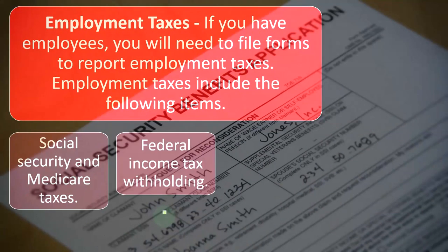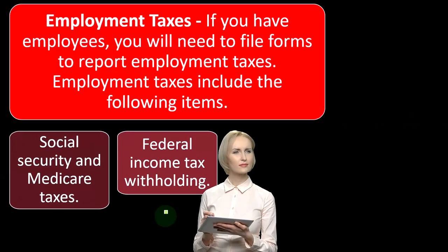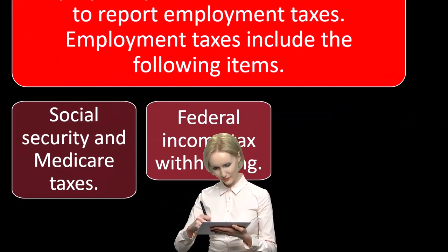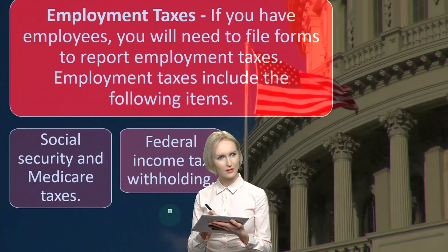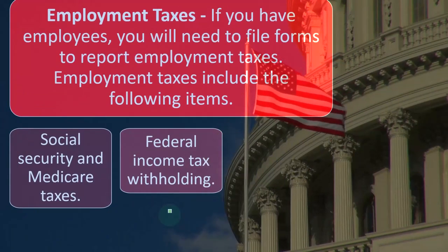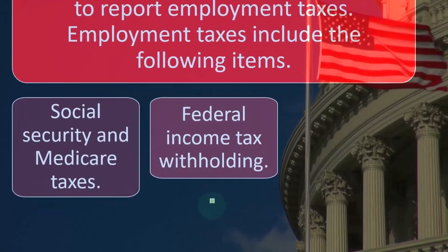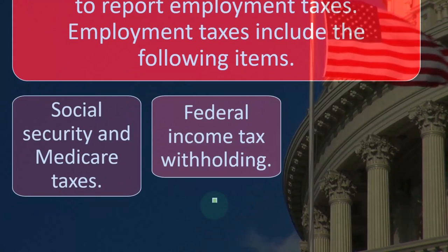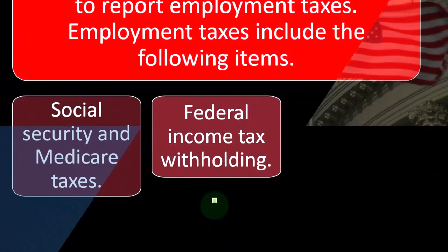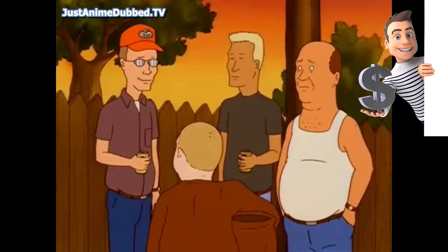Employment taxes include Social Security, Medicare taxes, and federal income tax withholdings. When we have employees, we have to deal with our portion and their portion of Social Security and Medicare — the payroll taxes — as well as federal income tax withholding. Don't confuse this with our own federal income tax reported on Form 1040. This is the employees' federal income tax that we are withholding from them — they will ultimately need to file a federal income tax return.